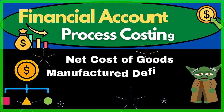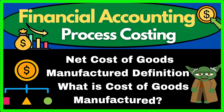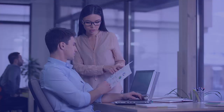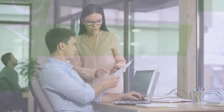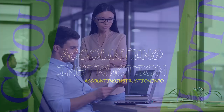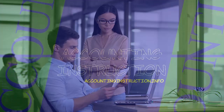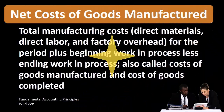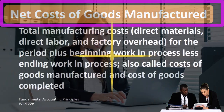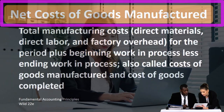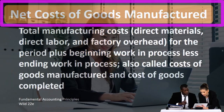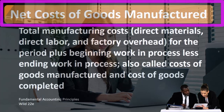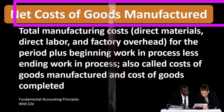In this lecture we will define net costs of goods manufactured. According to Fundamental Accounting Principles Wild 22nd Edition, the definition of net costs of goods manufactured is total manufacturing costs: direct materials, direct labor, and factory overhead.